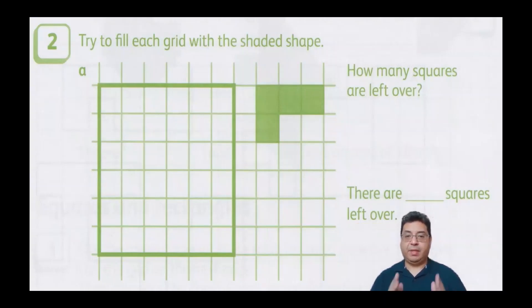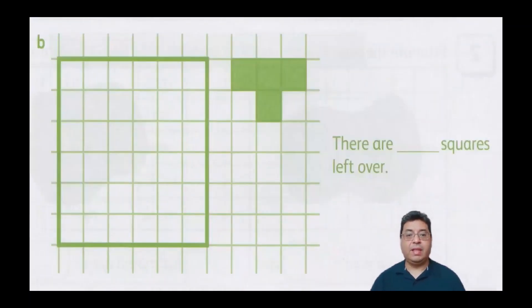So try to fit this L shape here inside the square, and do the best you can to fill it in, and then tell me how many squares are left over. And then here's the next one. And again, same idea, fit this T shape inside, and just tell me how many squares are left over.